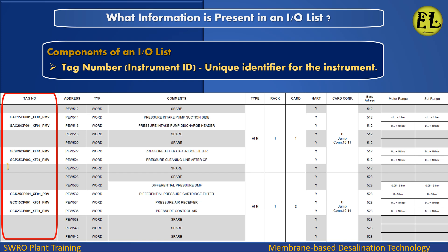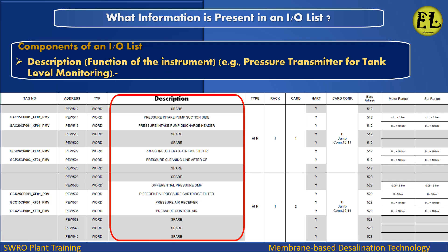Description: the function of the instrument. For example, a Pressure Transmitter for Tank Level Monitoring.